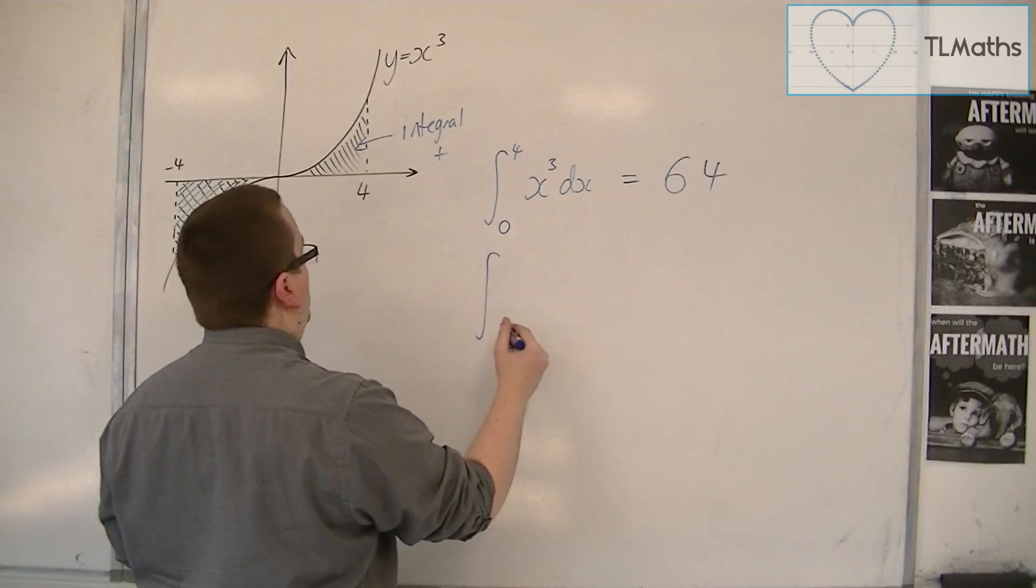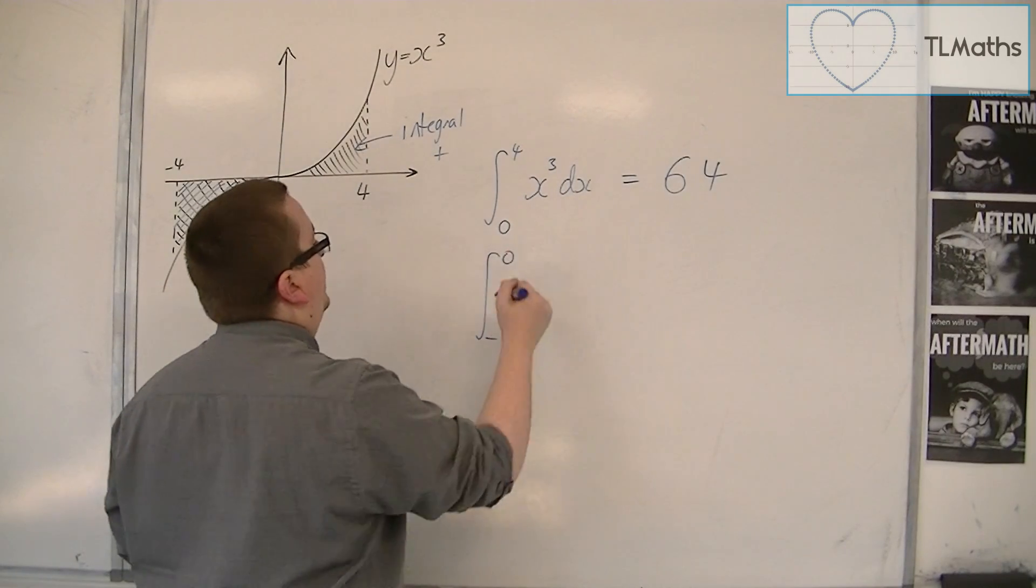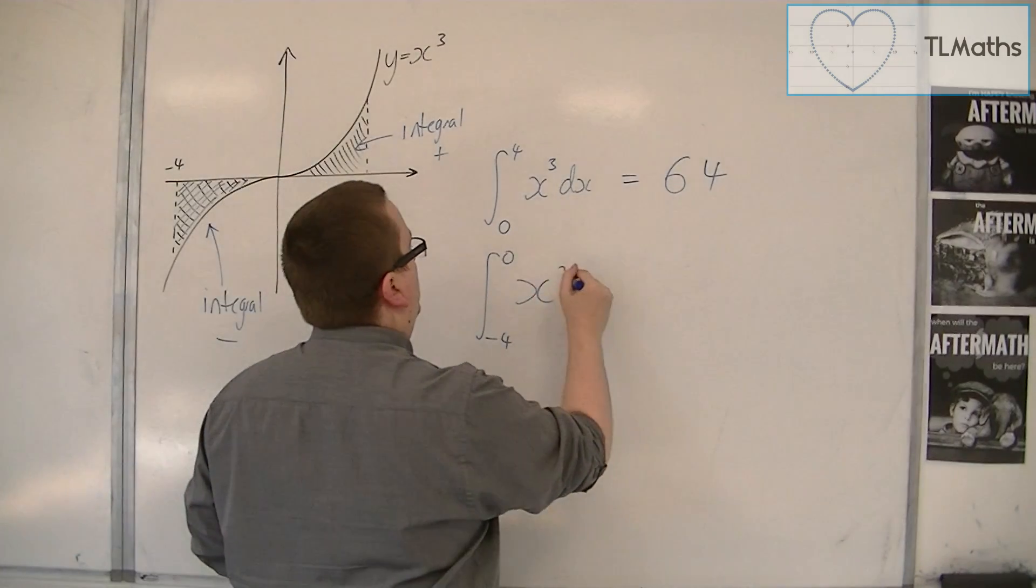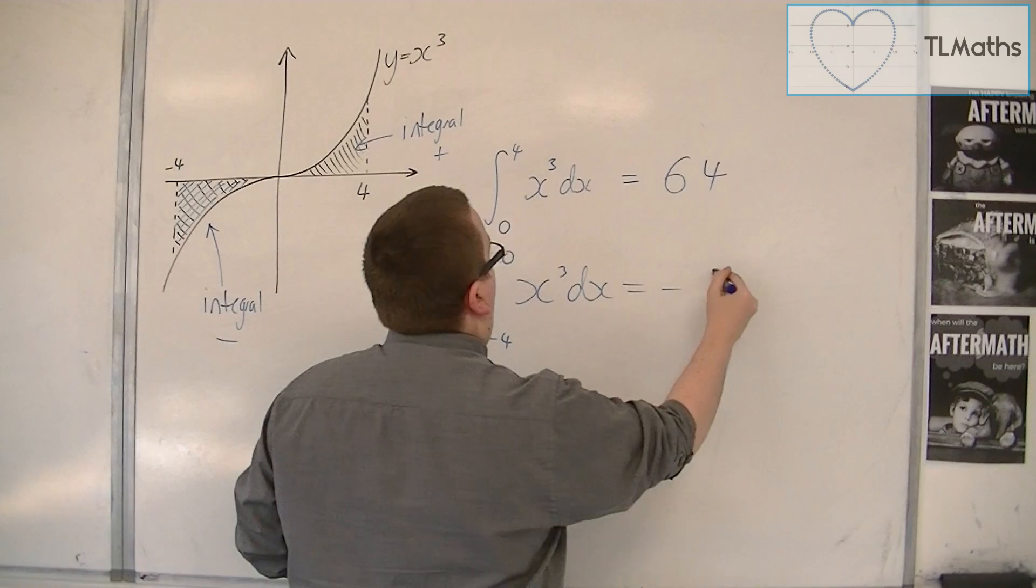You would then need to find the integral between minus 4 and 0, so minus 4 to 0, which we know is minus 64.